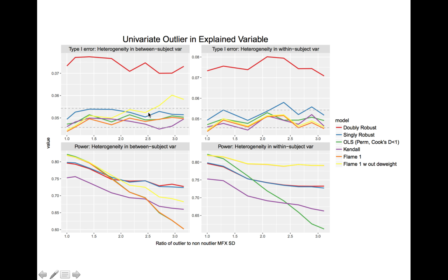When the outlier is driven by between-subject variance, FLAME1 with outlier detection is supposed to help with that, but something seems to go wrong when the outlier gets really strong. Otherwise, when the outlier isn't too extreme, OLS and the FLAME approaches do pretty well. It's only when the outlier gets really large that there's a big difference, with FLAME1 showing substantially less power than the robust models.